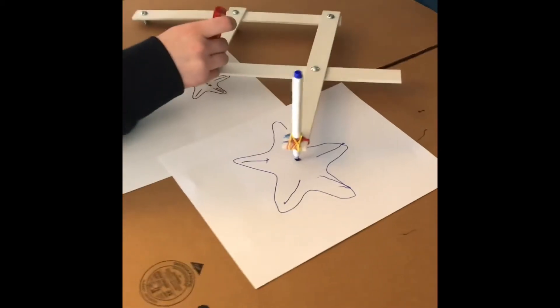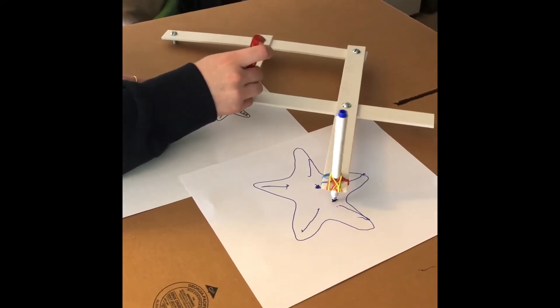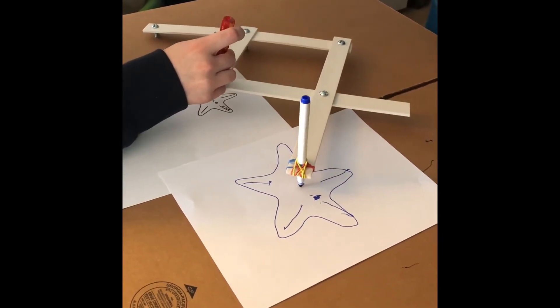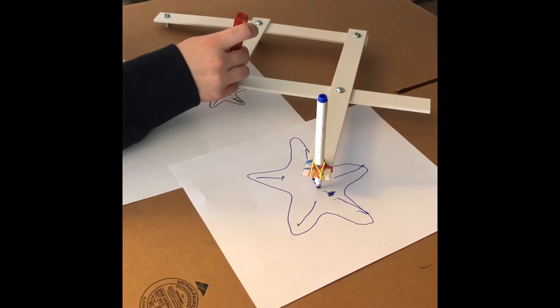The reason that it is a scaling factor of two is because I made sure that the distance from the anchor point to the marker is twice the distance of the anchor point to the tracing point.